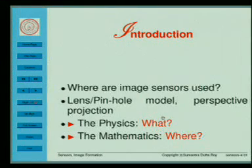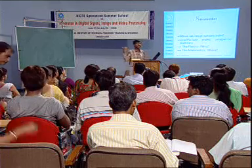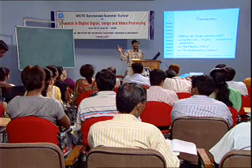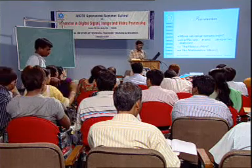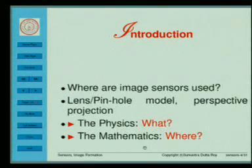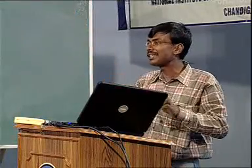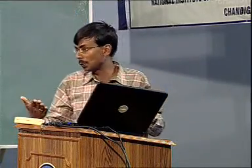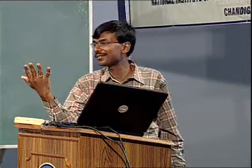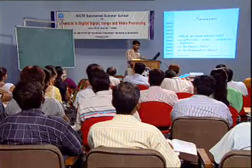The physics aspect: what is formed at a particular location in an image — that is what I refer to as the physics of image formation, which is non-standard terminology. The mathematics is where in the image is it formed: if I have a point x, y, z in the world, where in the image is it imaged to? Because there is a loss of dimensionality — from a 3D space we are going to a 2D space.